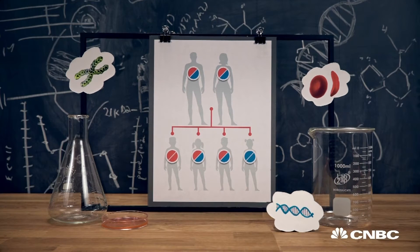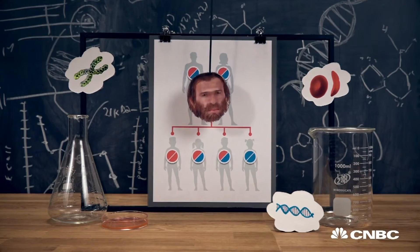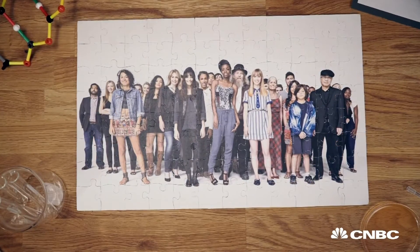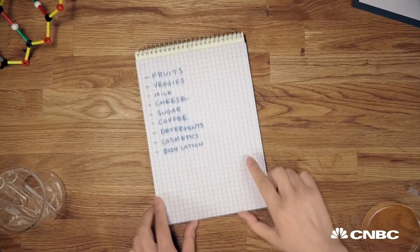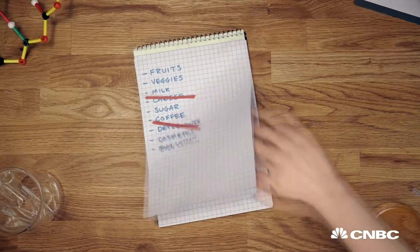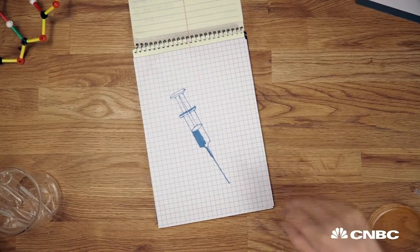23andMe can also tell you whether you have Neanderthal blood, or if you'll go bald. The potential for personal genomics is enormous. Individuals can use the knowledge to adjust their diets and prevent allergies. Researchers can use it to develop custom vaccines and medicines.